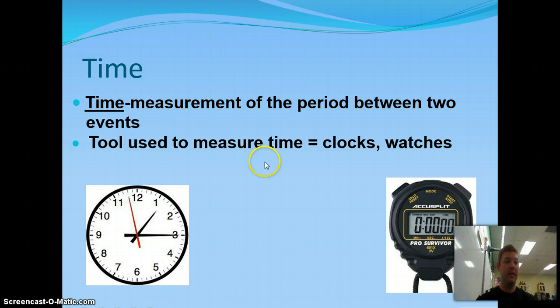Time. What is time? Time is a measurement of the period between two events. The tool used to measure time? Clocks and watches.